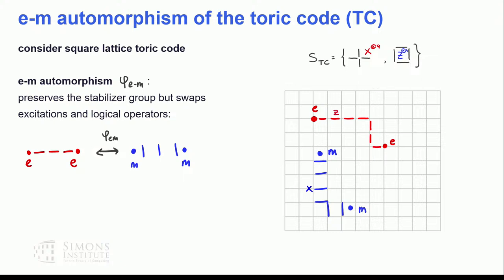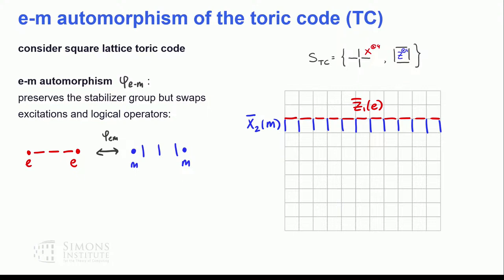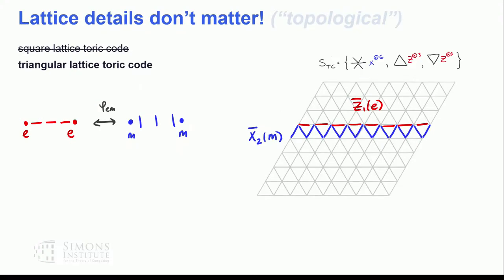The simplest example of an automorphism is the EM automorphism of the Toric code. In the square lattice Toric code, excitations are endpoints of strings living on vertices (e-type) or on plaquettes (m-type). The EM automorphism postulates that we can exchange these anyons and this will be a symmetry of the code. The respective logical strings generated by these anyons — a Z-string and an M-string — must also be exchanged under the symmetry. Because these are topological models, this is true for any triangulation of a manifold and is lattice-independent.